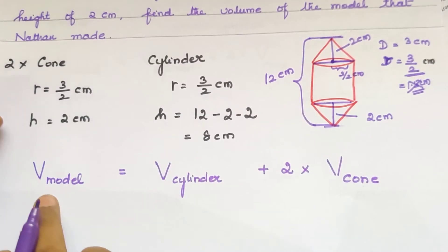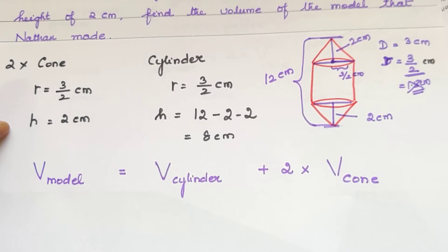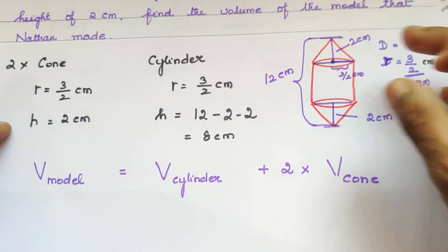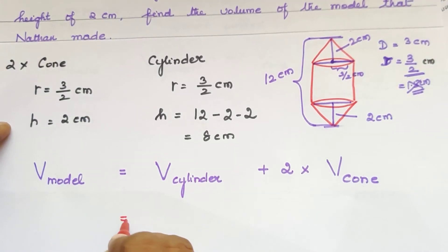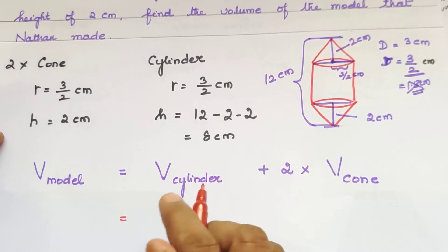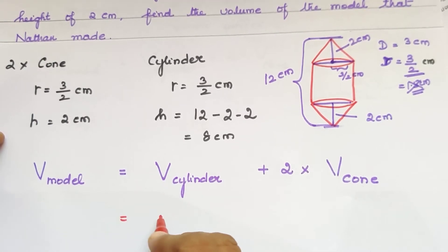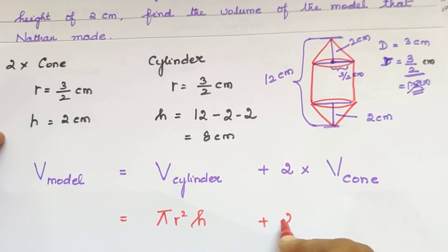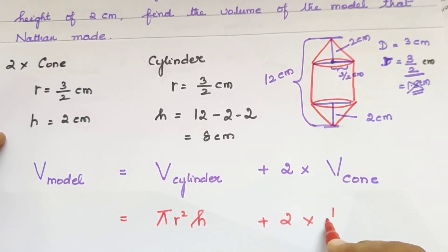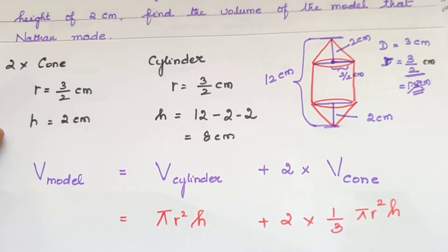So, Volume of the model = Volume of cylinder + 2 × Volume of cone. The formula is: Volume of cylinder = π r² h, plus 2 into (1/3) π r² h.